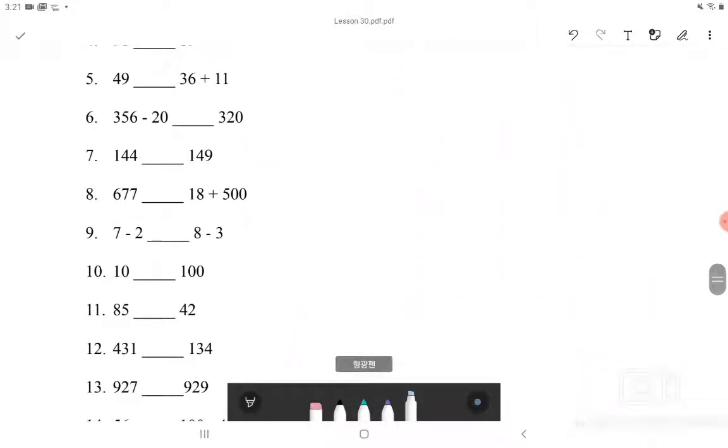I will also do number 9. Number 9 says 7 minus 2 and then 8 minus 3. We know that 7 minus 2 is equal to 5. And 8 minus 3 is also equal to 5. So, because both of them is 5 and 5, we know that 7 minus 2 is equal to 8 minus 3.